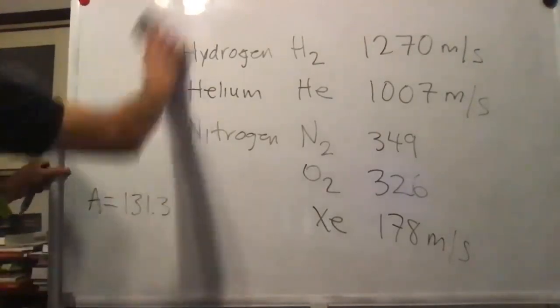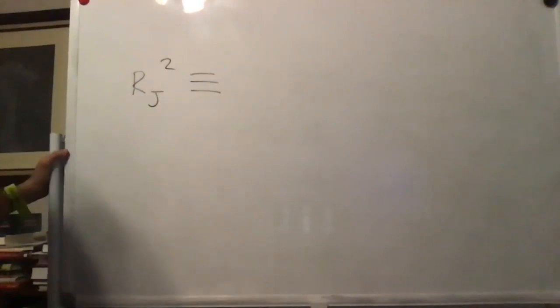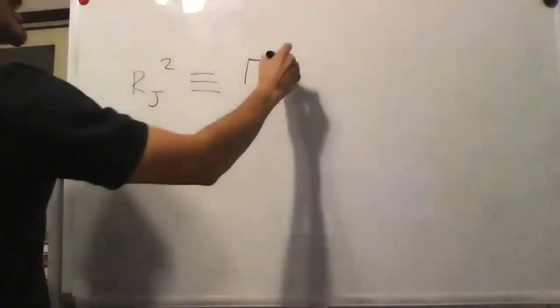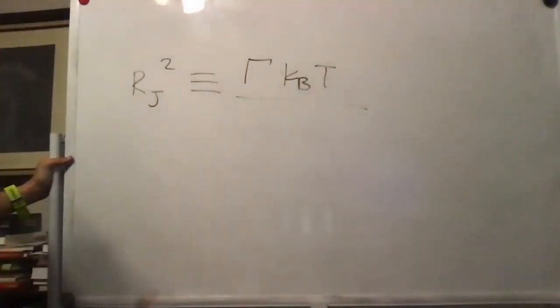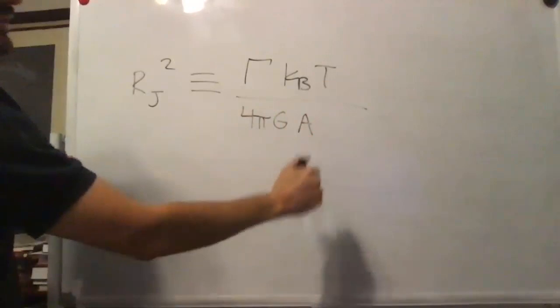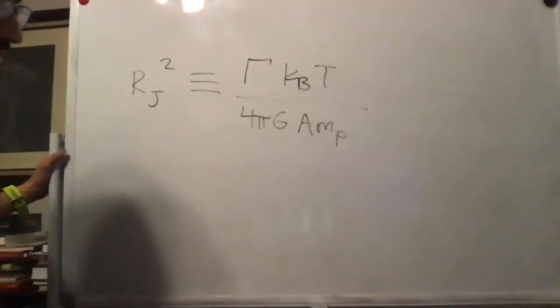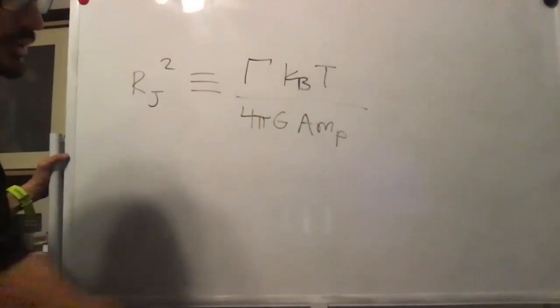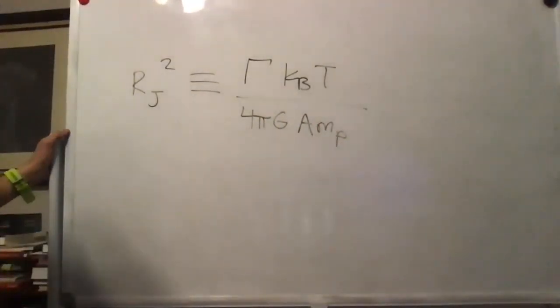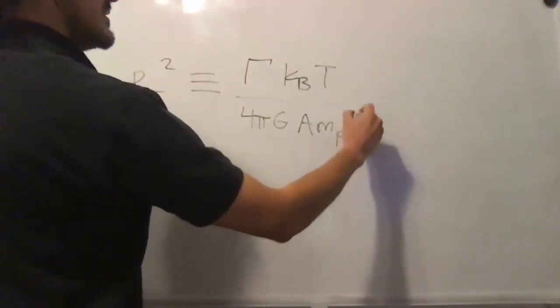Now we can express the Jeans length more precisely. We define it as the square root of: (adiabatic index × k_B T) divided by (4π G × number-of-nucleons A × proton mass m_p × density rho). We're ignoring electron mass and assuming proton and neutron mass are the same — a reasonable approximation within our order-of-magnitude approach.